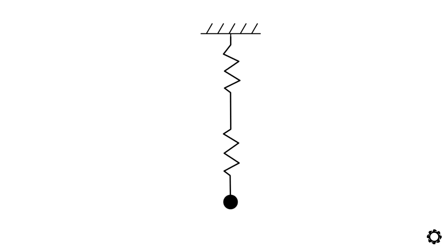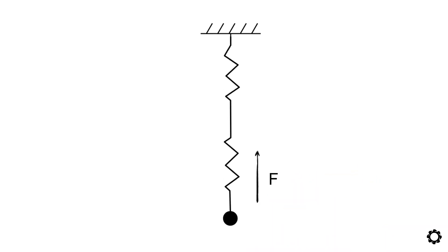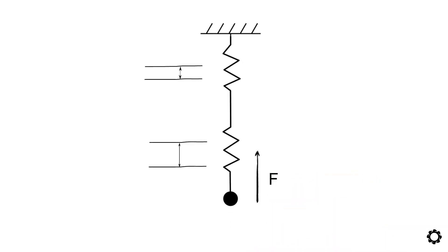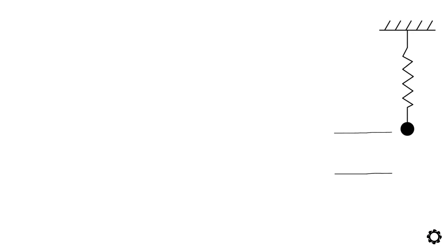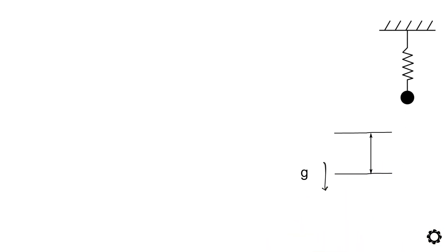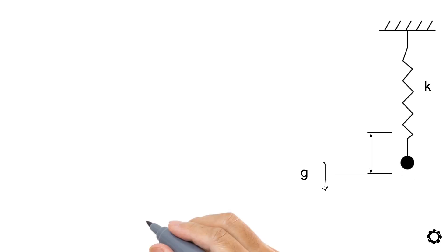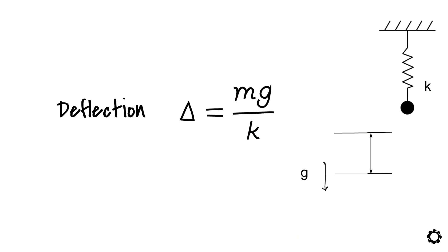In series, one spring is attached to the other sequentially, allowing them to experience the same force but undergoing different deflections. If we recall from our previous video where we talked about the stiffness coefficient, the deflection of the spring-mass system subjected only to the gravity force was proportional to the gravity pull and inversely proportional to the stiffness coefficient of the spring. In equation terms, deflection delta equals m times g divided by k.